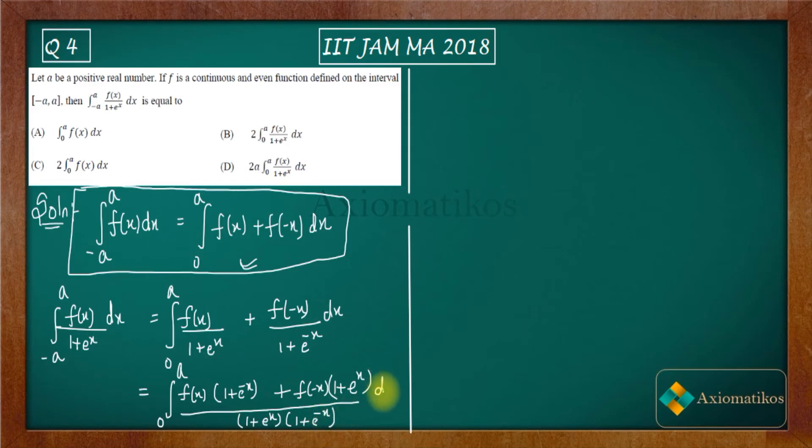So finally what you have, let us consider the original integral to be I. So I is equal to zero to a. You have f of minus x and you have this as f(x). What do you know about f? It's an even function. What is the meaning of even function? It means f of minus x is equal to f(x). So you can take your f(x) common because they are equal.